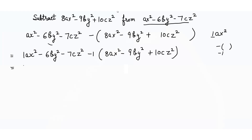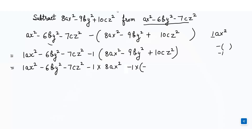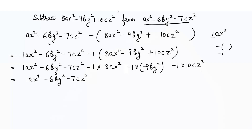Now we open the bracket by multiplying -1 by all the terms inside. So: -1 × 8ax² = -8ax²; -1 × (-9by²) = +9by²; and -1 × 10cz² = -10cz². So we now have: 1ax² - 6by² - 7cz² - 8ax² + 9by² - 10cz².